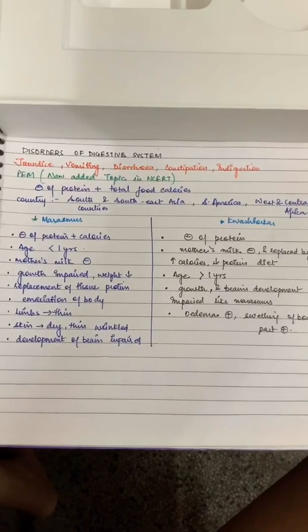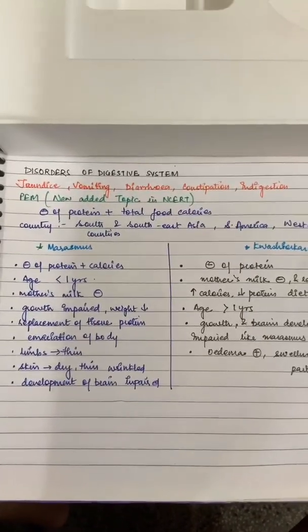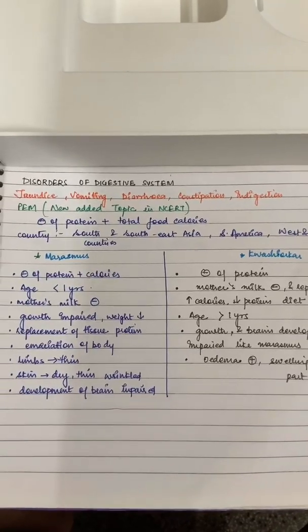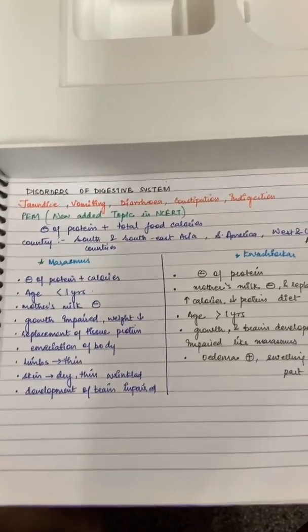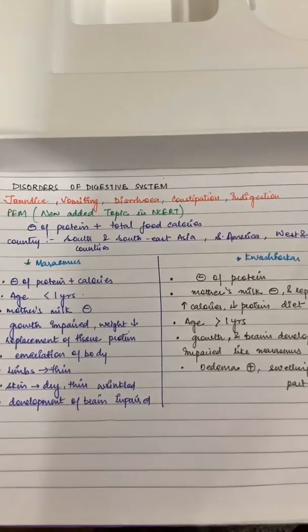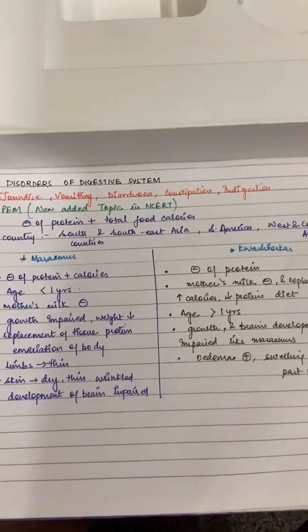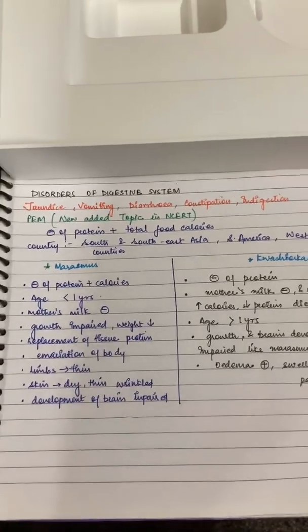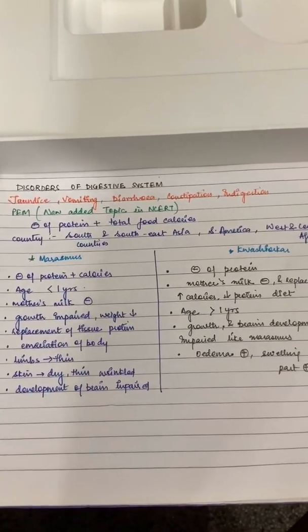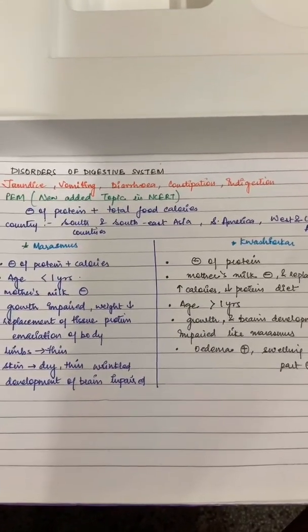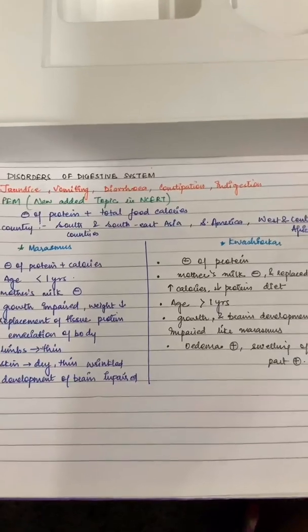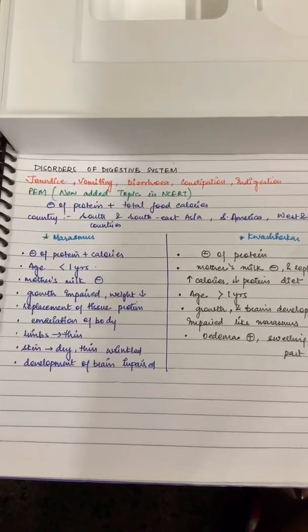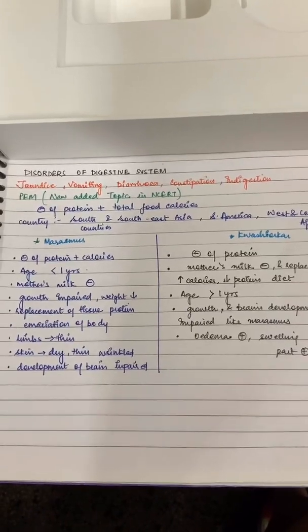Now let's come to disorders. In NCRT, the definitions of jaundice, vomiting, diarrhea, constipation, and indigestion are given — but they are only one sentence each, so read them from NCRT. There isn't much extra in NCRT, but if you want to learn more, your coaching notes or Google will have additional information.